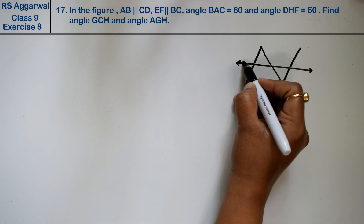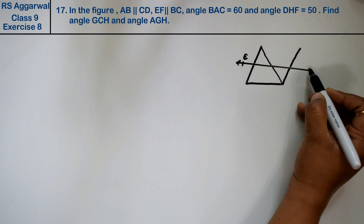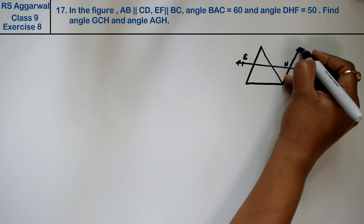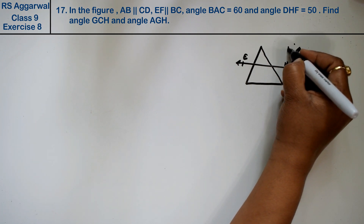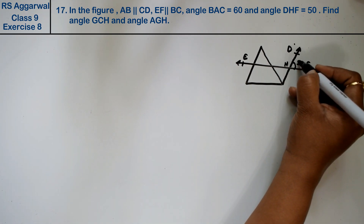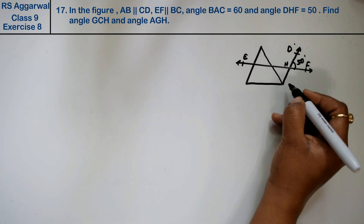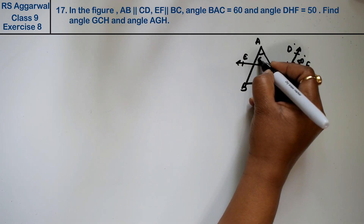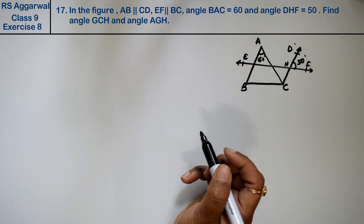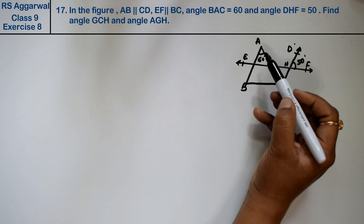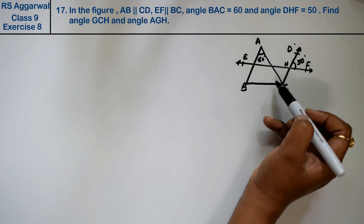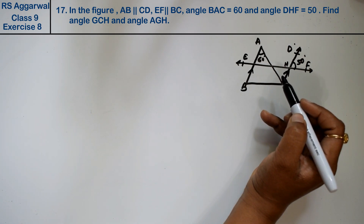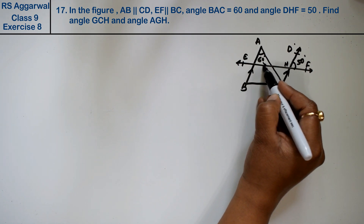In the given figure, the labeled points are E, F, H, and B. The given conditions are: AB is parallel to CD, and EF is parallel to BC.